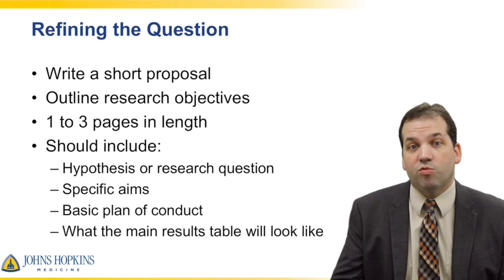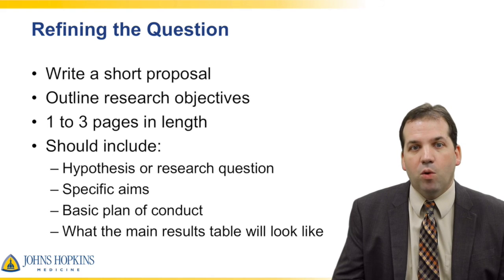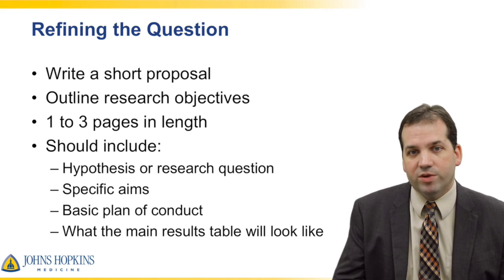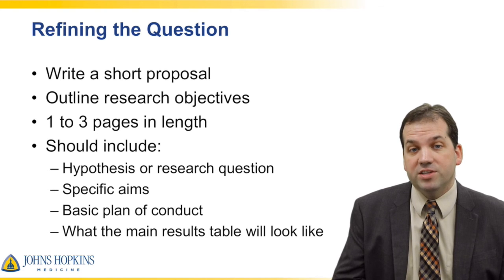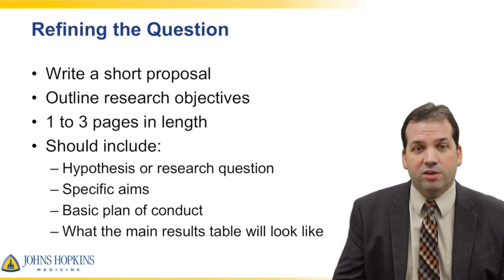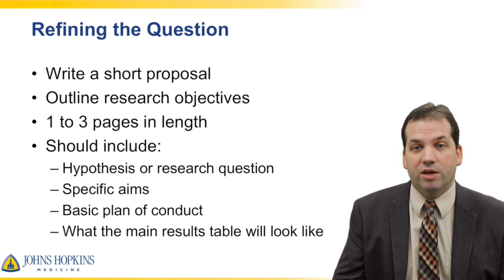The next step is to write a short proposal that outlines the research objectives, about one to three pages in length. Typically these proposals include a hypothesis or research question, specific aims about what you're doing in the study, a basic plan of conduct or the methods, and maybe even what the main results might look like — what you're expected to see, what a table might look like from this study.